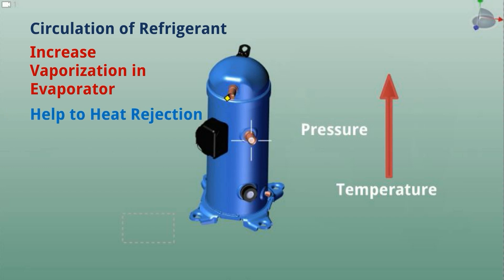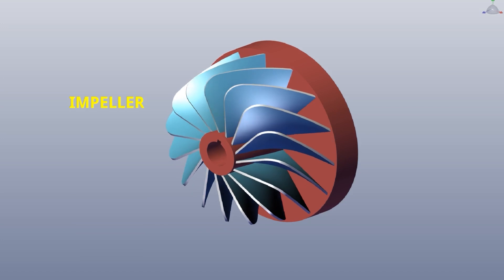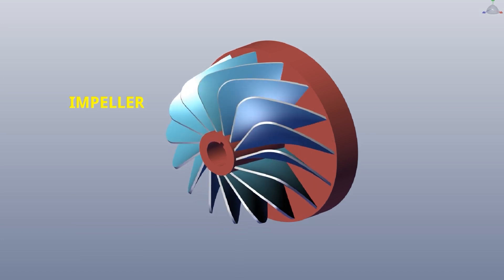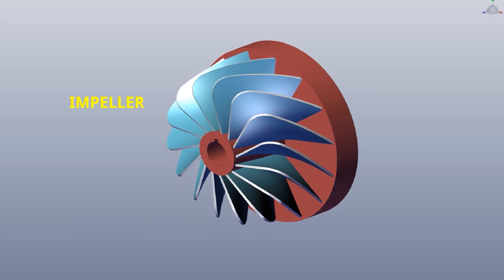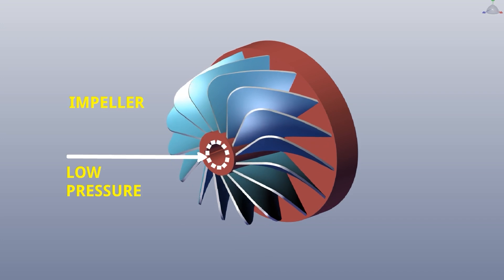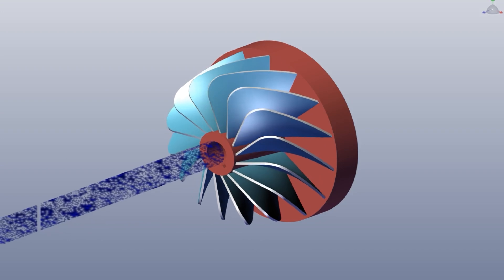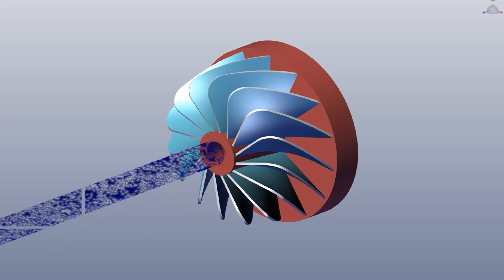Let us try to understand. This is the impeller of the compressor and it is connected to a motor. When the motor runs, the impeller will also rotate. The rotation of compressor impeller creates a low pressure here. Low pressure means it will take the refrigerant vapor from the evaporator.